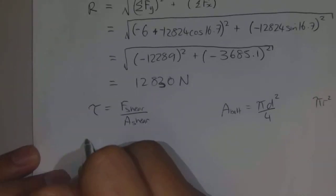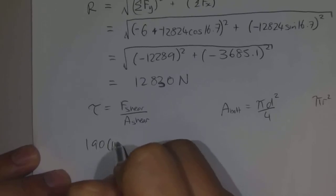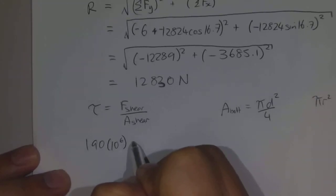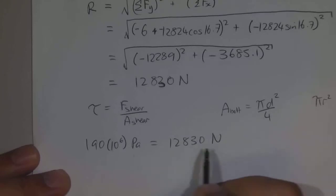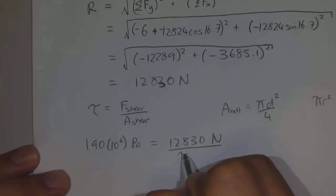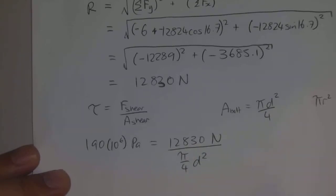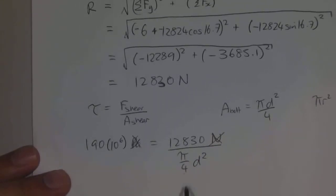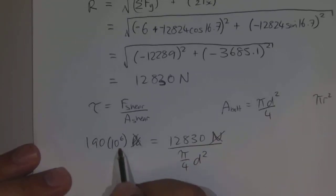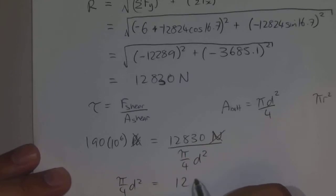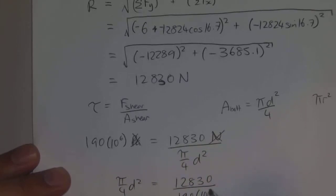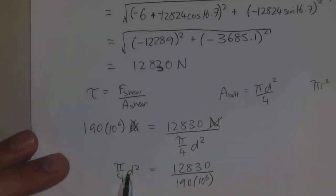We're told that the shear stress is 190 megapascals, so 190 times 10 to the 6 pascals. The shear force we've calculated is 12,830 Newtons, and the area in shear we have an equation for: pi over 4 times d squared. We can rearrange this equation — dropping the units for now, but because we've got pascals and newtons our value of d is going to be in meters. So bringing this up to the left hand side: pi over 4 times d squared equals 12,830 divided by 190 times 10 to the 6.